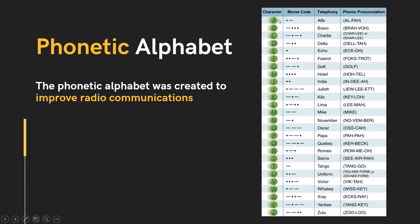Let's now read together the phonetic alphabet: Alpha, Bravo, Charlie, Delta, Echo, Foxtrot, Golf, Hotel, India, Juliet, Kilo, Lima, Mike, November, Oscar, Papa, Quebec, Romeo, Sierra, Tango.